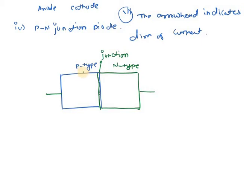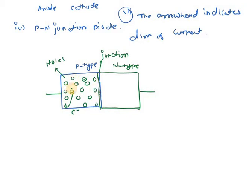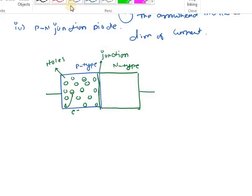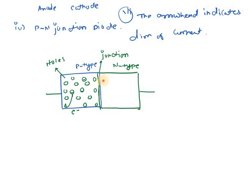In the P-type semiconductor, holes are the majority charge carriers while electrons are the minority charge carriers. In the N-type semiconductor, the picture reverses: electrons are the majority charge carriers while holes are the minority charge carriers. So we have a large number of holes on the P side and a large number of electrons on the N side. We have now connected P-type with N-type semiconductor.